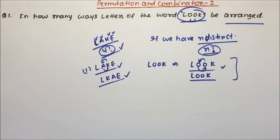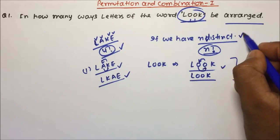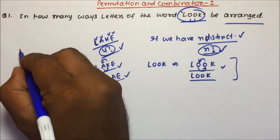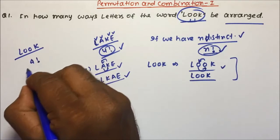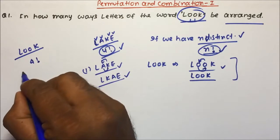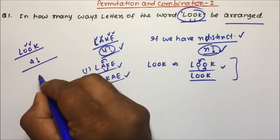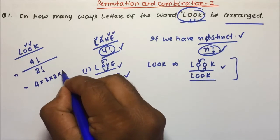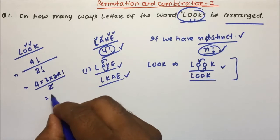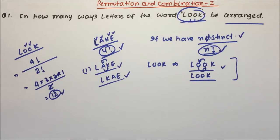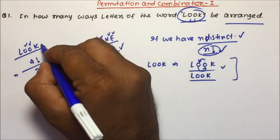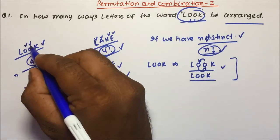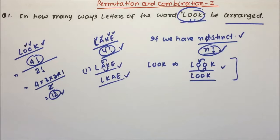Whenever we do not have distinct letters, we divide by the factorial of the number of repetitions. For the word LOOK, there are 4 letters, so we start with 4 factorial. But O is repeated 2 times, so we divide by 2 factorial. That gives us 4 factorial divided by 2 factorial = (4×3×2×1) / 2 = 12. So there are 12 ways in which the letters of the word LOOK can be arranged.